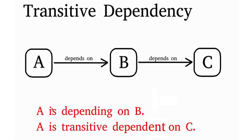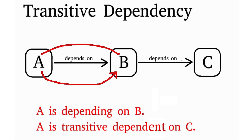Then you can say A is depending on B, and A is transitively dependent on C. You have transitive dependency every time when you have a hop in your dependency.